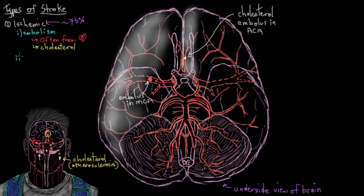Another major type of ischemic stroke is a thrombotic stroke. It's similar to an embolic stroke in that a blood vessel supplying part of the brain gets completely blocked, but the difference is that emboli arise away from the brain. Whereas in a thrombosis, the problem actually arises in that blood vessel itself and it gets blocked off at that very spot.